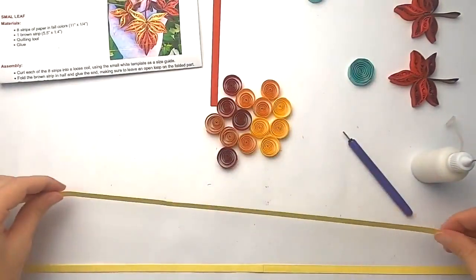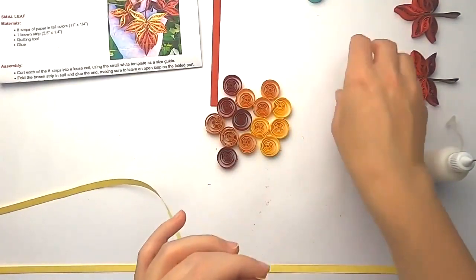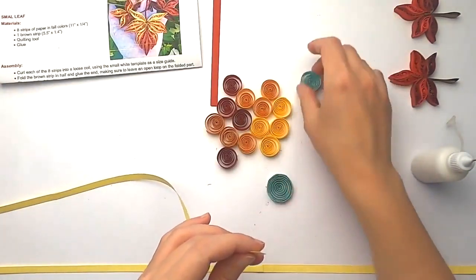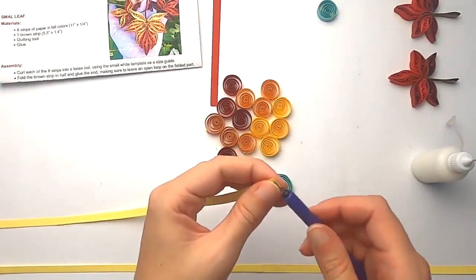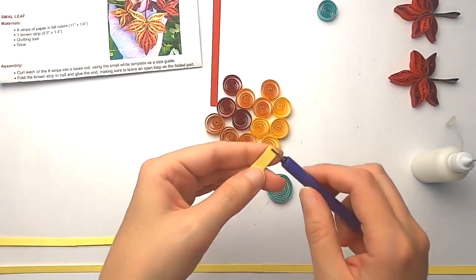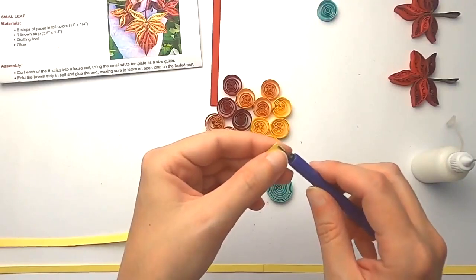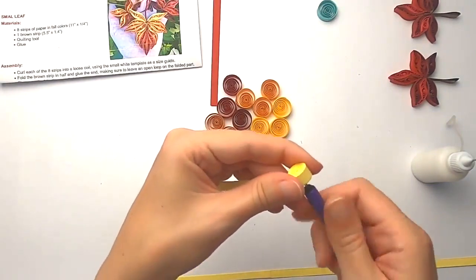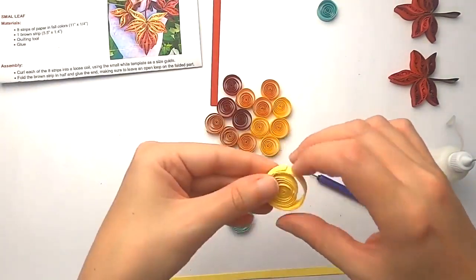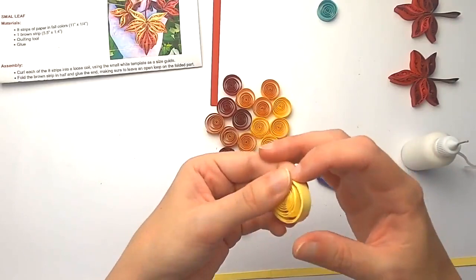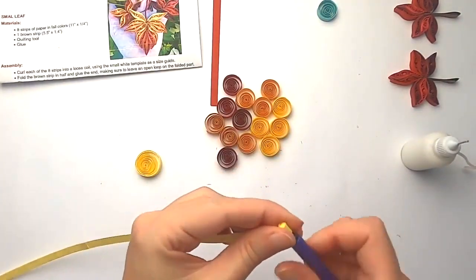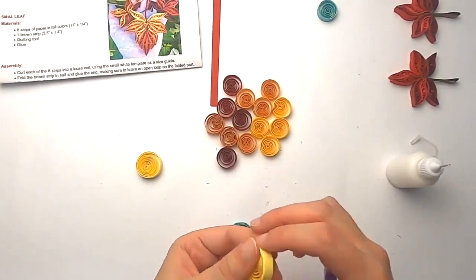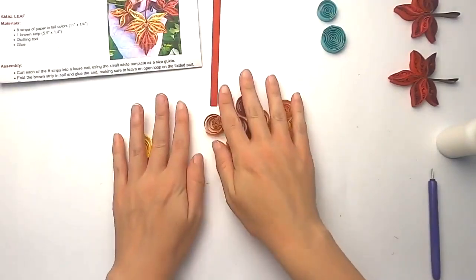We're going to work on the big ones. The big ones is the same exact thing. Only we'll be using the larger template to measure them by. So we're going to start by inserting the strip on the quilling tool and curling again till the end. All right now we have all the pieces.